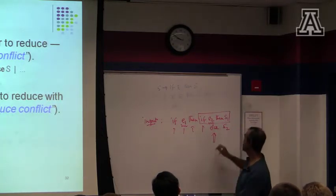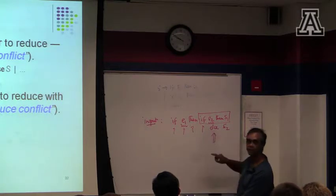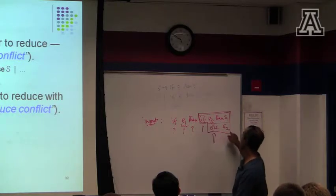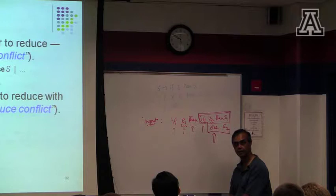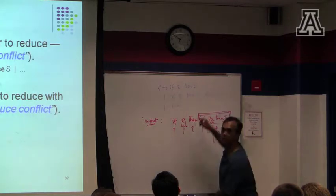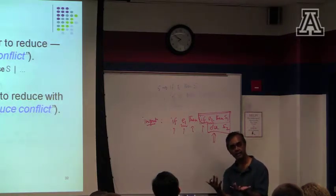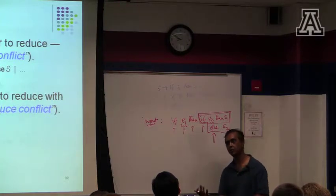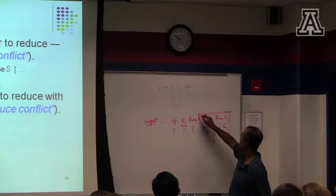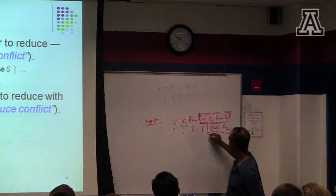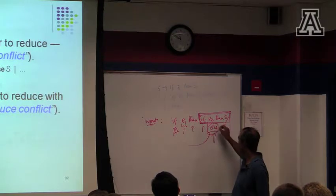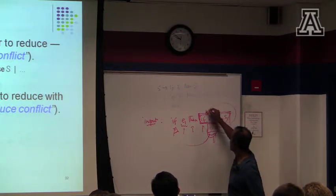The other possibility is that when I see the else, I hold off and shift. If I hold off and shift, what I end up doing is reducing the token sequence to a statement, and then the outer if matches if, E, then, this whole statement. So the two parses — depending on whether I shift first or reduce first — either associate this else with the inner if, or this else with the outer if.